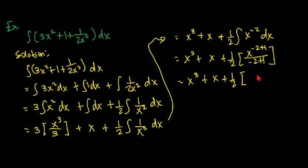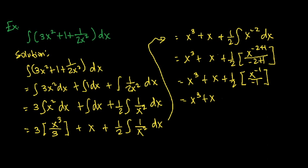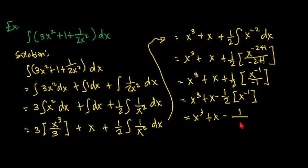Simplifying 3/3 = 1 gives us x³ + x + (1/2)·[x^(-2+1)/(-2+1)]. Since -2+1 = -1, this becomes x³ + x + (1/2)·(x^(-1)/(-1)), which equals x³ + x - (1/2)x^(-1). Bringing x^(-1) to the denominator gives us x³ + x - 1/(2x) + C as our final answer.